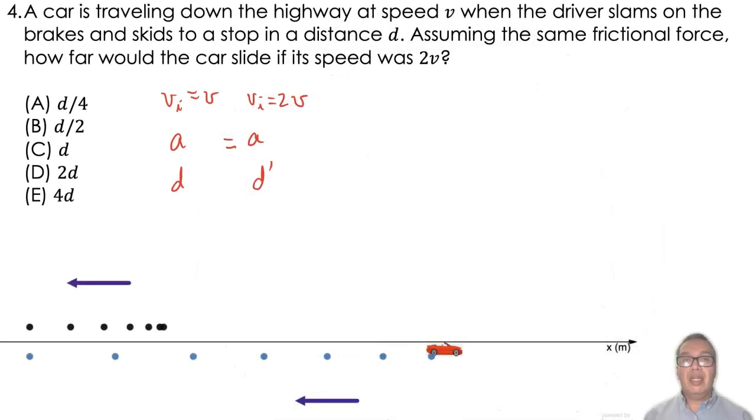If the car is skidding to a stop, it means that its final velocity is equal to zero.